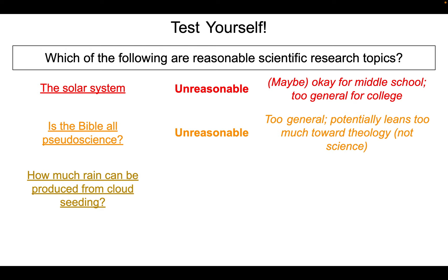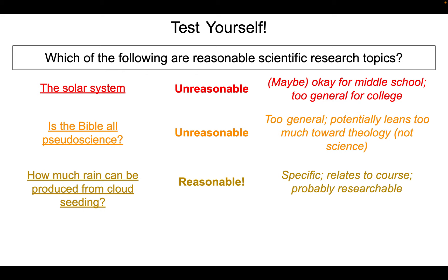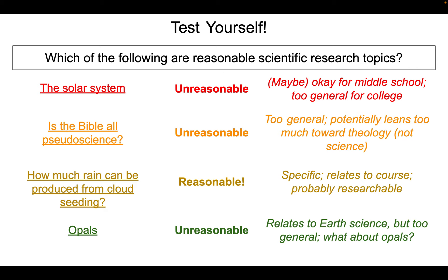How much rain can be produced from cloud seeding? This is a phenomenally good topic — perfectly reasonable. Why do we like it? It's specific. It obviously relates to the course since we talk about meteorology in this class. And most likely it's quite researchable — we should be able to find some information about this. So it looks great. And finally, opals. I think you know this is a big problem. Although opals connect to geology, it is totally unreasonable as a topic. It's way too general. What about opals? Their formation? Their hardness? You've got to be more specific.